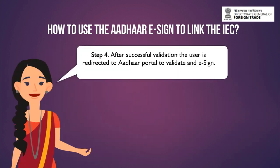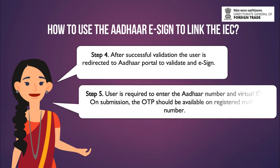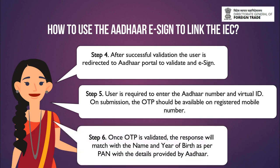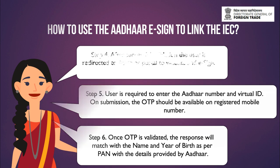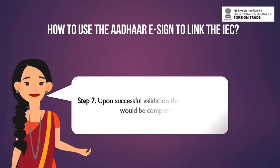After successful validation, the user is redirected to the Aadhaar portal to validate and eSign. The user is required to enter the Aadhaar number and virtual ID. On submission, the OTP should be available on the registered mobile number. Once OTP is validated, the response will match the name and year of birth as per PAN with the details provided by Aadhaar. Upon successful validation, the eSign process would be completed.